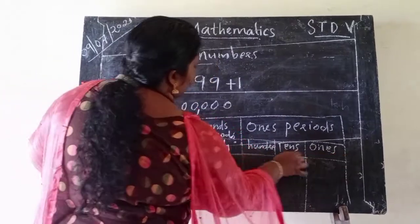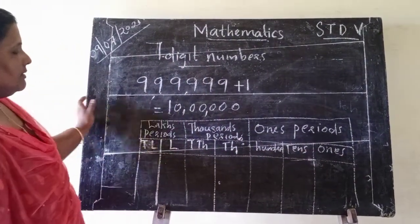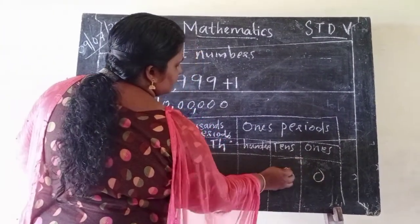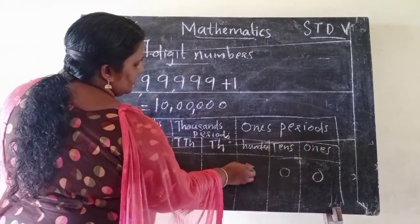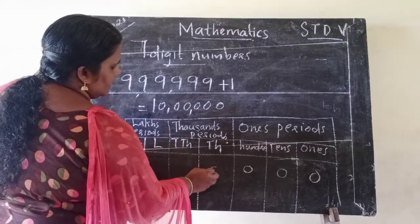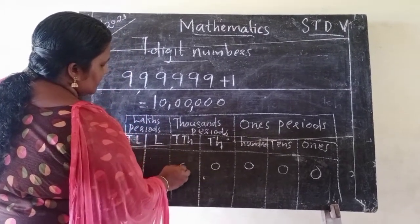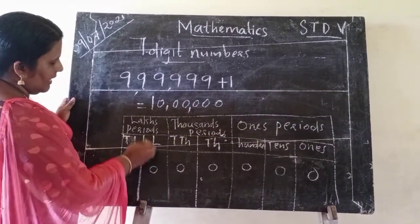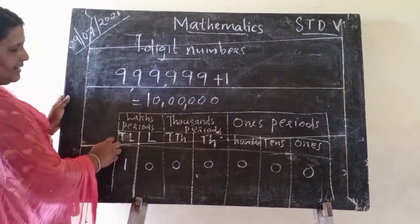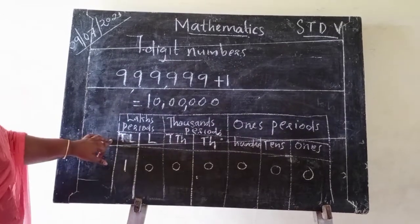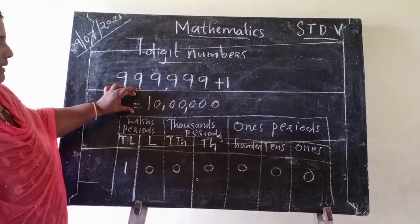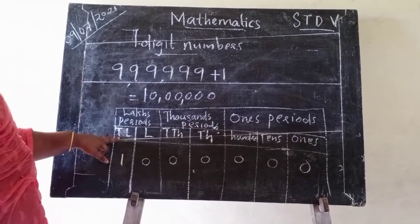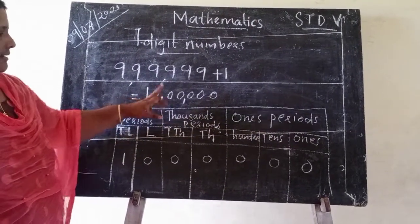We write the numbers from the left. Zero ones, zero tens, zero hundreds, zero thousands, zero ten thousands, zero lakhs, and one ten lakh. Therefore, this number is read as ten lakh. One ten lakh means ten lakh.